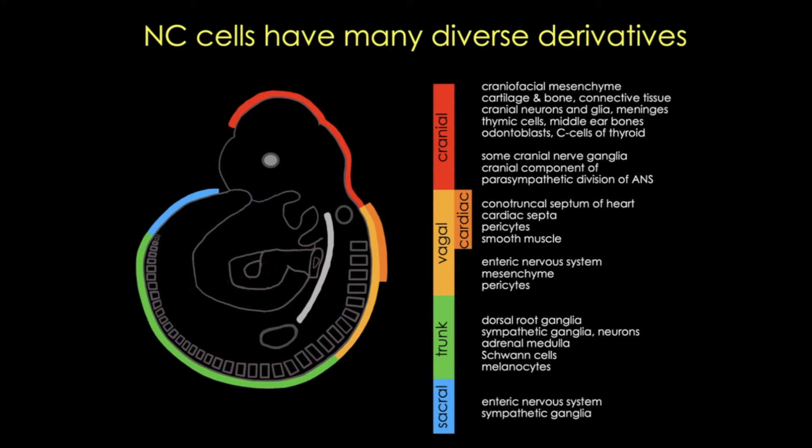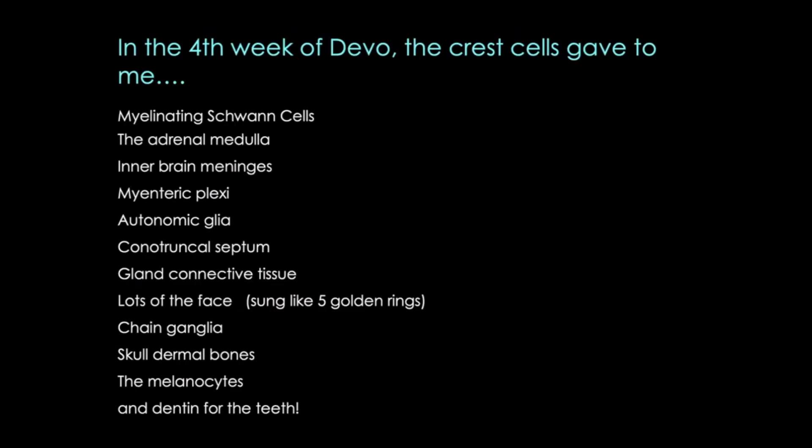Students have different ways to remember lists, and although I'm not a great singer, songs can help. Here's one way I remember some of the neural crest derivatives: In a fourth week, a divo, the crest cells gave to me — myelinate and Schwann cells, the adrenal medulla, inner brain, the meninges, my enteric flexi, autonomic lea, conotruncal septum, grand connective tissue, lots of the face, chain ganglia, skull dermal bones, the melanocyte, and some dentin for the teeth.